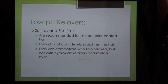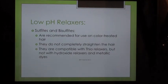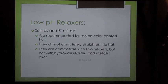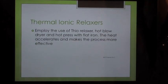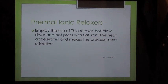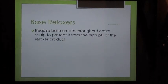Low pH relaxers: Sulphites and bisulphites are recommended for use on color-treated hair. They do not completely straighten the hair. They are compatible with thio relaxers but not with hydroxide relaxers or metallic dyes. Thermal ionic relaxers employ the use of a thio relaxer, a hot blow dryer, and a hot flat iron — the heat accelerates and makes the process more effective.